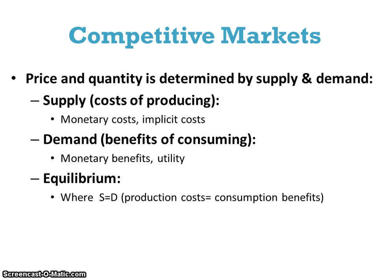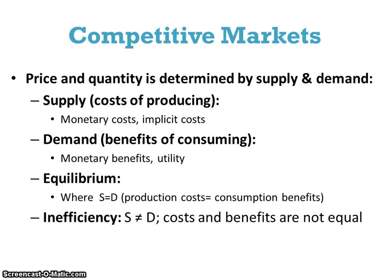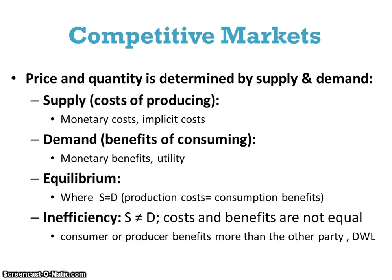In competitive markets, when markets can produce at their equilibrium quantity and sell at their equilibrium price, life is good — things are ideal. But inefficiencies result when supply does not equal demand and the costs and benefits of production are not equal. When we're not at our equilibrium, dead weight loss exists and consumption and production benefits are not going to be equal to one another.